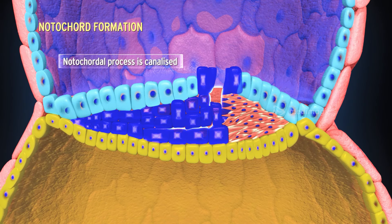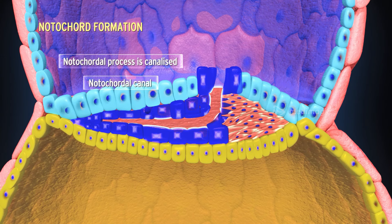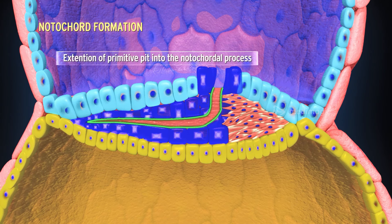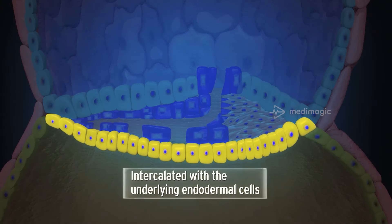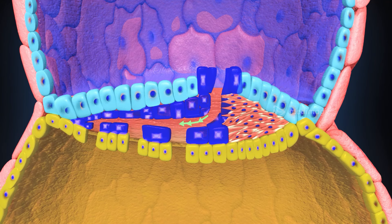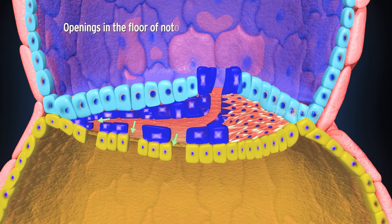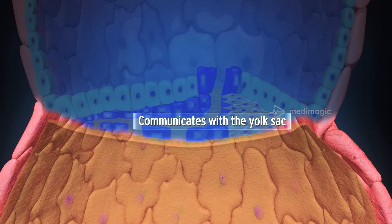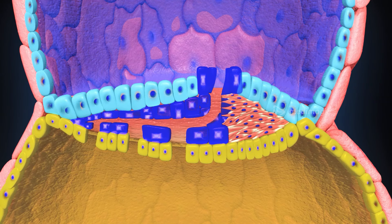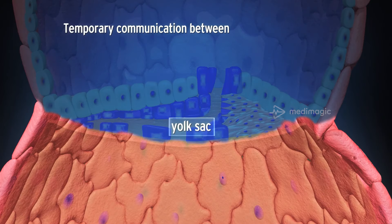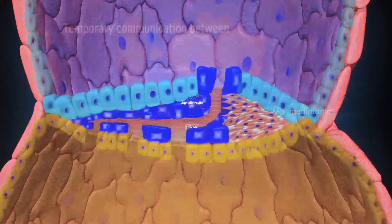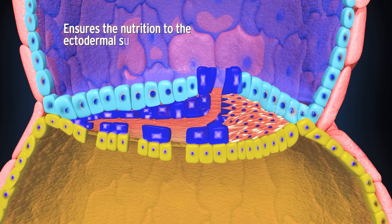The notochordal process is canalized to form the notochordal canal by the extension of the primitive pit into the notochordal process. The cells in the floor of the notochordal canal become intercalated with the underlying endodermal cells of the roof of the yolk sac. The fused layers gradually degenerate in a cranio-caudal direction, resulting in openings in the floor of the notochordal canal. Thus the notochordal canal communicates with the yolk sac through the primitive pit, and also communicates with the amniotic cavity, establishing a temporary communication between the yolk sac and amniotic cavity. This communication ensures nutrition to the ectodermal surface of the germ disc until the formation of blood vessels.